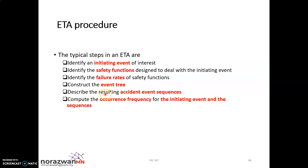After you have developed your ETA or event tree analysis, you can describe the resulting accident event consequence. You can calculate or compute the occurrence frequency from the initiating event and follow its sequence — from your initiating event, what is your safety function's success or success rate — until you have your consequence event. This is the main information you need to understand before you can develop your event tree analysis.